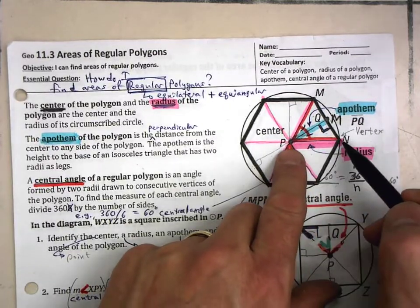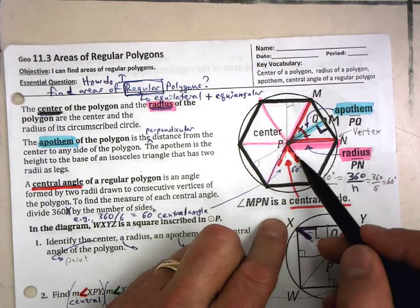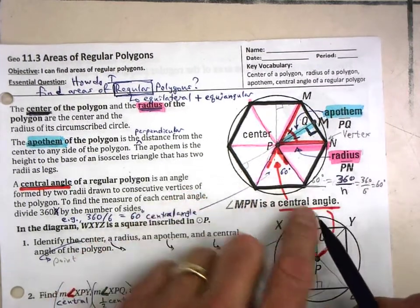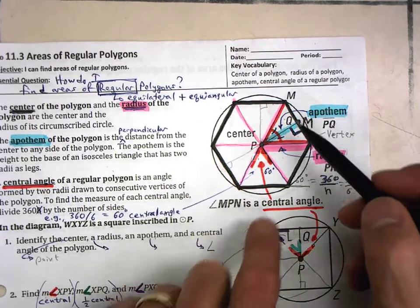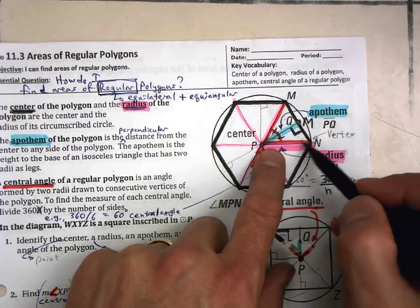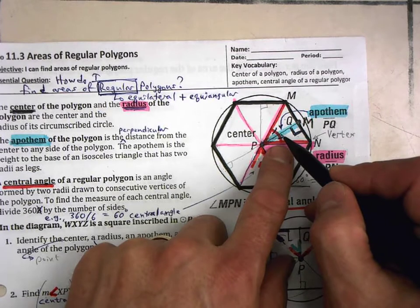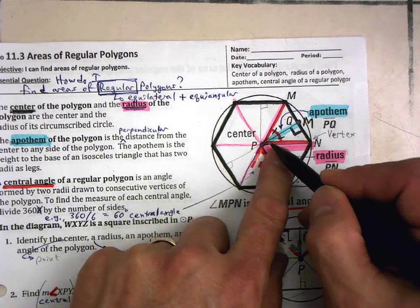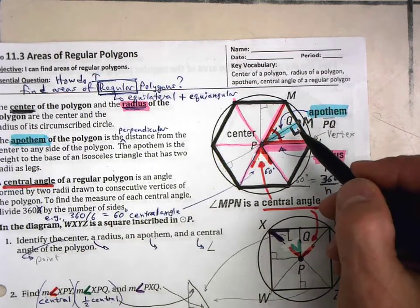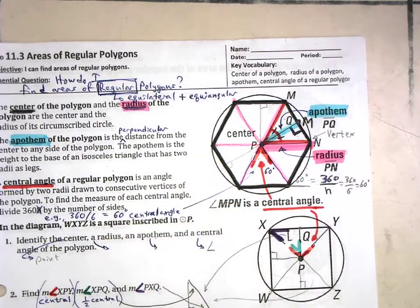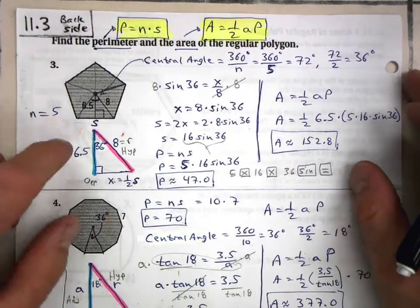We have radii here, and the angle between the radii is your central angle. You find the central angle by taking 360 divided by the number of sides. Then we have a right triangle, and you'll remember that one angle is half of your central angle — because this is your apothem — and that will help us find the area of a regular polygon.